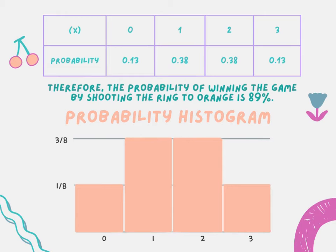We can see here the numbers 1, 2, and 3. To get the probability, we will add 0.38 plus 0.38 plus 0.13 and we will get 0.89, then convert it to a percentage. Therefore, the probability of winning the game by shooting the ring to the orange straw is 89%.